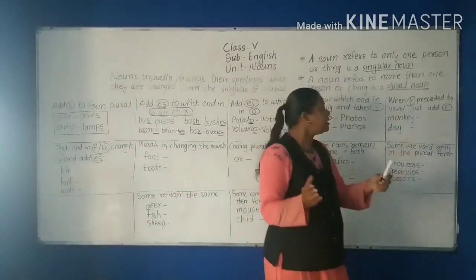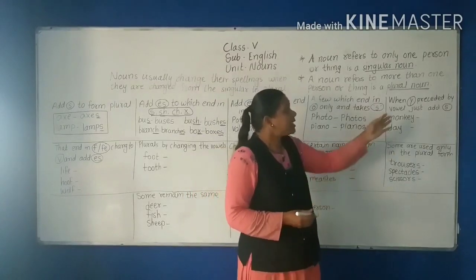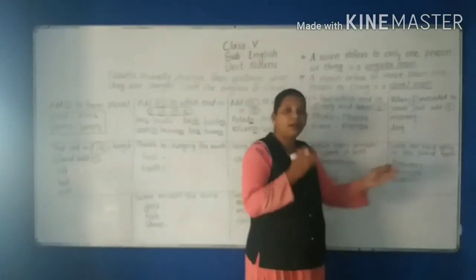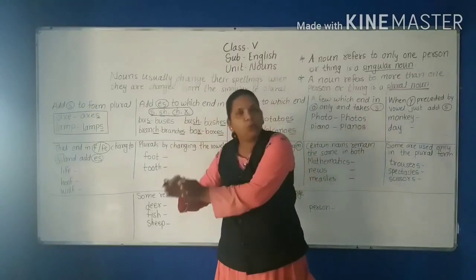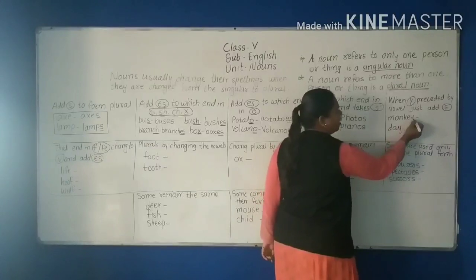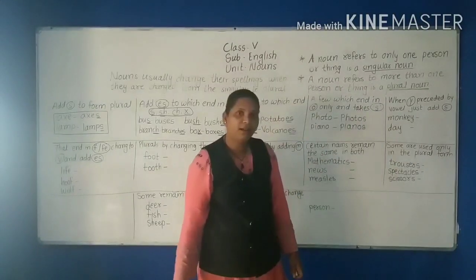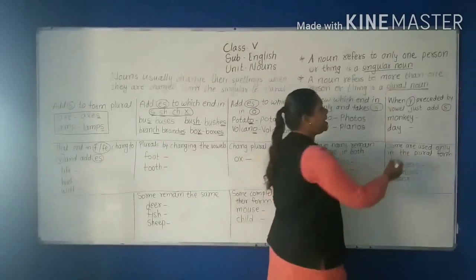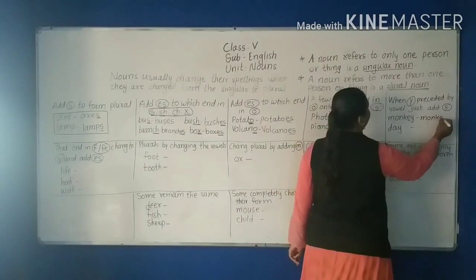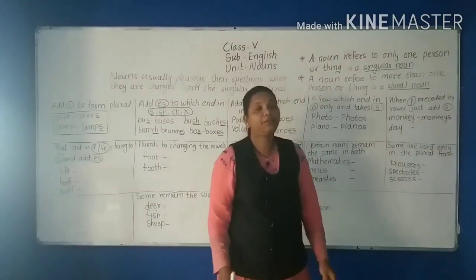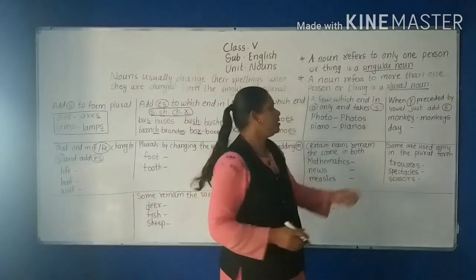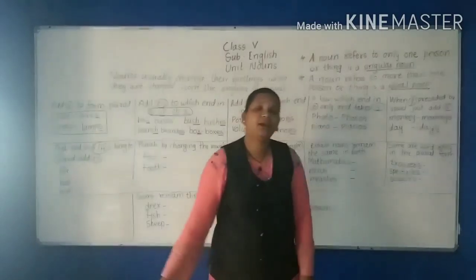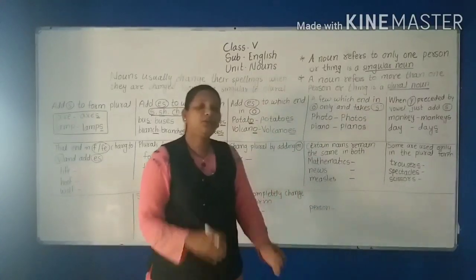When 'y' is preceded by a vowel, just add 's'. Look at 'monkey' — before the 'y' there is a vowel, so we add 's' to get 'monkeys'. The same way: 'day' becomes 'days', 'key' becomes 'keys', 'boy' becomes 'boys'.